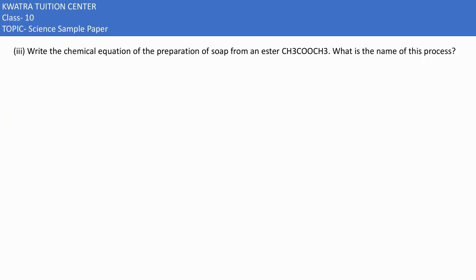Then we have the third part. In the third part we have to write a chemical equation to prepare soap from an ester. So ester is CH3COOCH3. And if you want to create a soap, react it with NaOH.